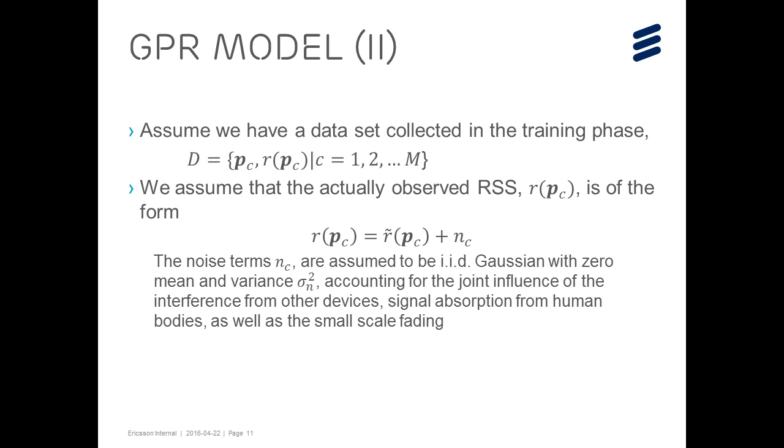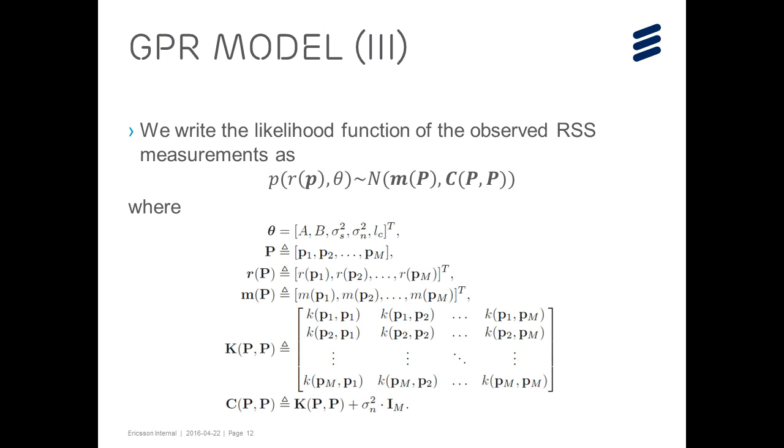In order to train a Gaussian process regression model, we need to collect a set of RSS measurements together with their positions. The actual observed RSS value can be seen as a clean value plus some additive noise. Then, the likelihood function is formed to determine the parameters theta from the training dataset.